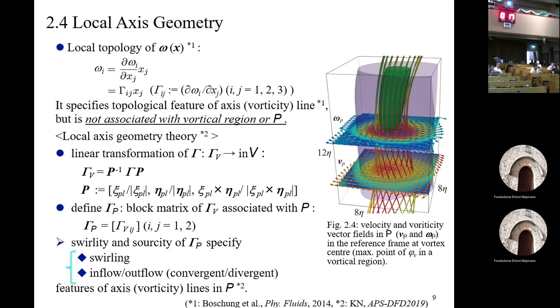If we estimate sorority or source-ity in this block matrix, it can specify the swirling feature, or the inflow or outflow feature, in the swirl plane.